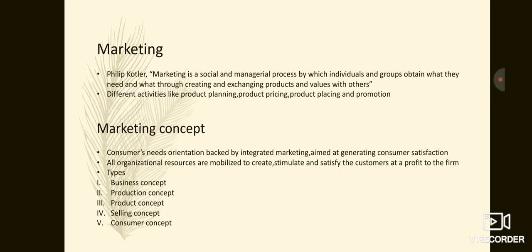This is the production concept. The next one is the product concept. The product concept seeks to win markets and profit by offering high quality products. It directs efforts toward making superior products and improving them over time. The focus is on continuous product planning and development. Next is the selling concept. The dominant idea guiding this concept is that most buyers need to be persuaded — firms produce goods with anticipation of selling them.